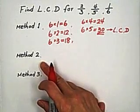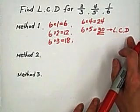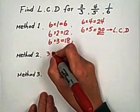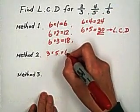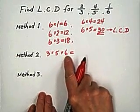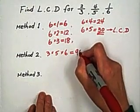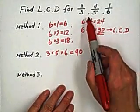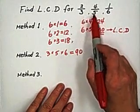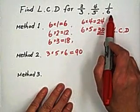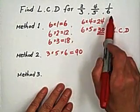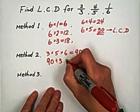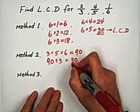Using Method 2 to find the LCD: first multiply all the denominators — 3 times 5 times 6 equals 90. Then divide by common factors. There is no common factor for all three, but 3 and 6 share a common factor of 3. So 90 divided by 3 equals 30. The common denominator is 30.